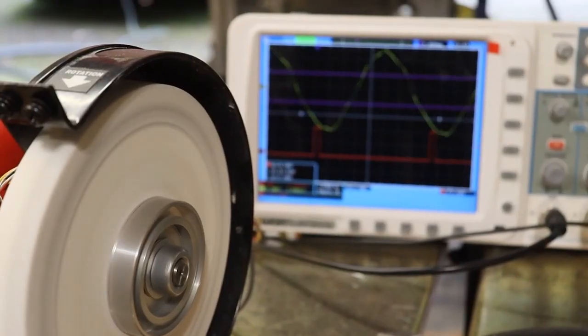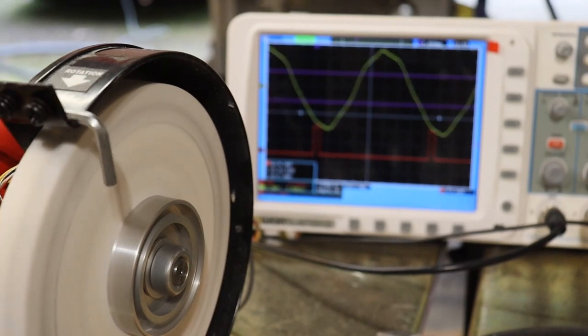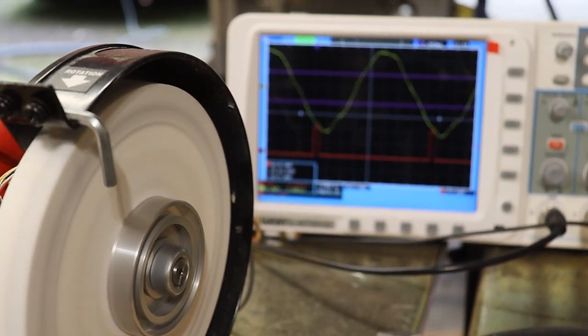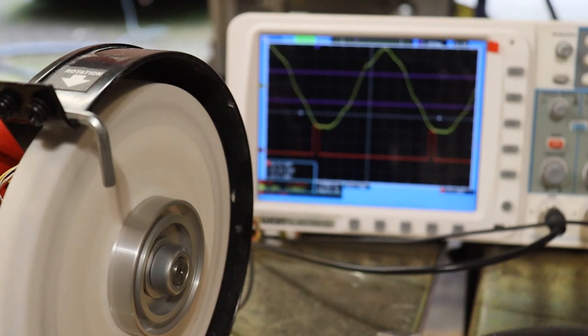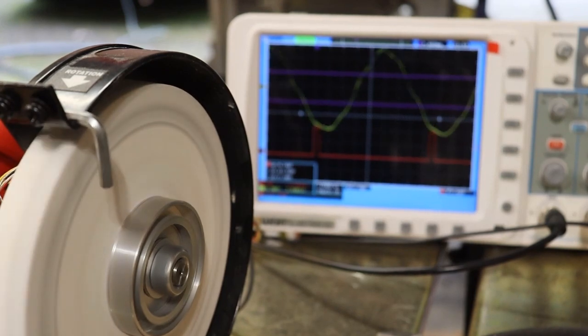It is time now to test all together. Turning on the grinder and letting it spin up. As expected, the wheel is not properly balanced, and that is why we see large amplitude of acceleration.